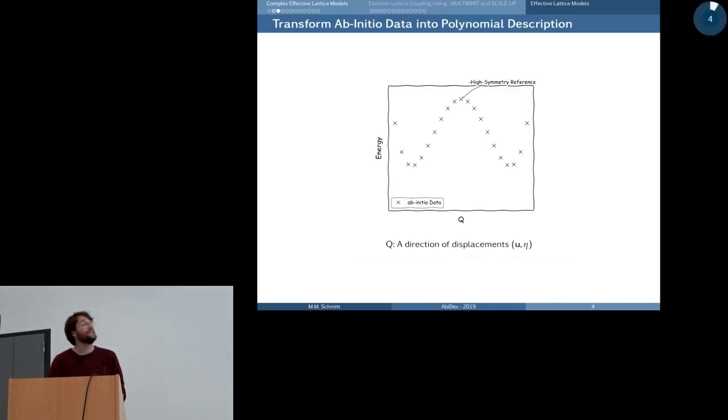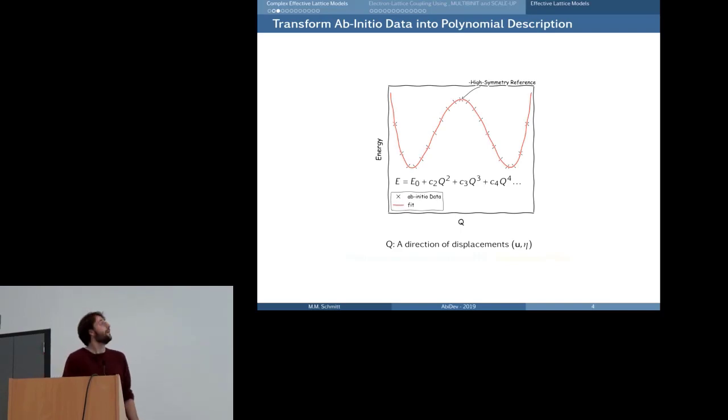In practice, this means that we want to get some ab-initio data. So here I'm looking just in one dimension and get some ab-initio data and want to transfer that into a polynomial expression. In one dimension this looks quite easy. What we do is the harmonic part we extract from DFPT directly, and the higher order we fit to the data that we have.